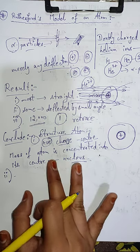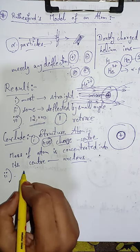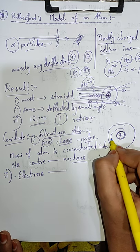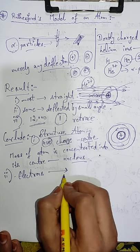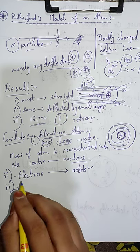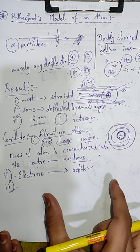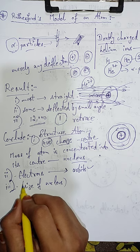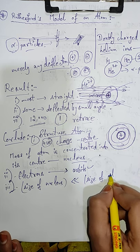Phir inhone kya kaha? Electrons revolve around the nucleus in well-defined orbits — electrons ke baare mein inhone bataya ki electrons is central part ke charon taraf revolve karte hain, aur woh bhi particular orbits mein. Yani ki ek fixed path mein revolve karte hain. Teesri cheez jo inhone di thi: the size of nucleus is very small as compared to the size of atom.